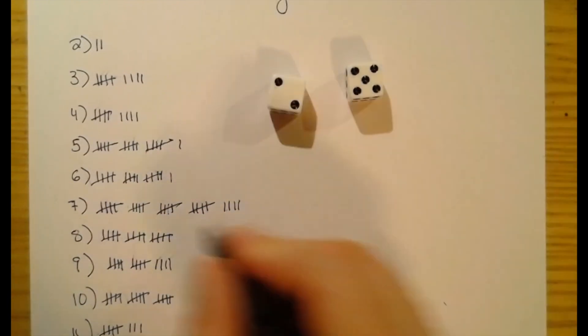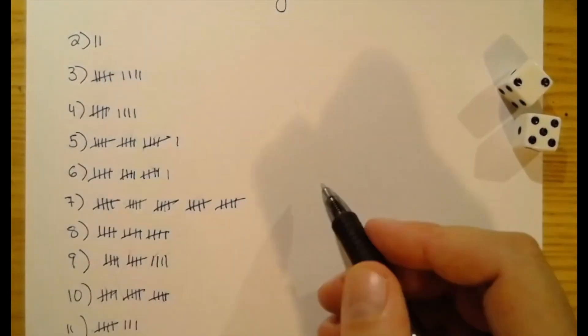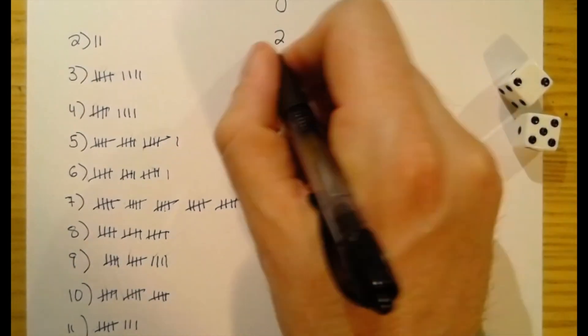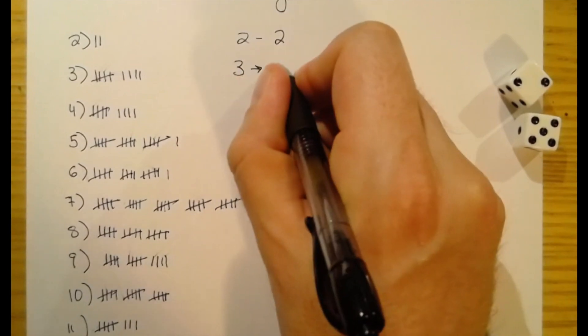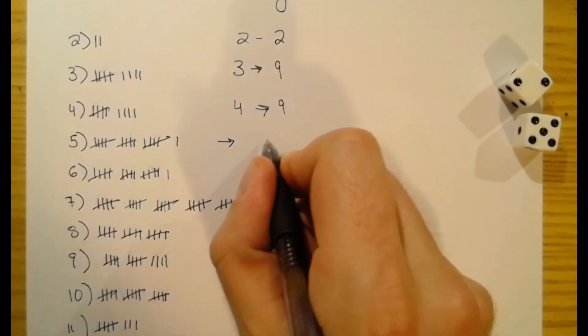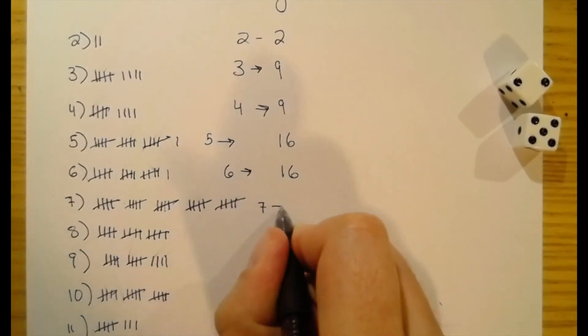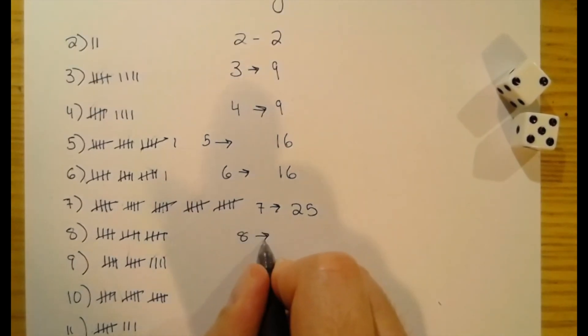Alright, that's going to be it. I was going to say keep on going until you have at least five of each outcome, but I think another good stopping spot is if we have 25 of one outcome. So now we'll just tally them all up. So I've got two twos. For threes, I've got nine of them. For fours, I've got nine of them. For fives, I've got 16 of them. For six, I also got 16. For seven, I got 25. For eight, I got 15. For nine, I got 14. For 10, I got 15. For 11, I got eight. And for 12, I got seven.